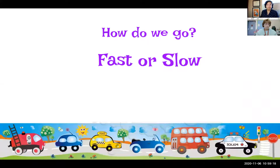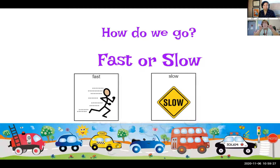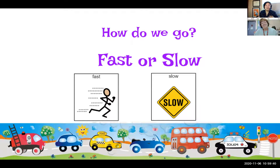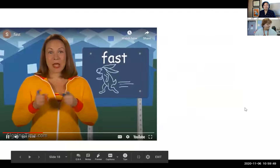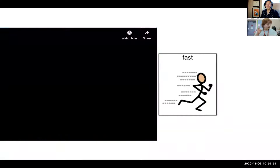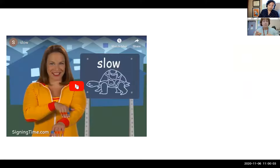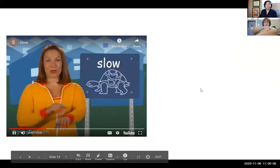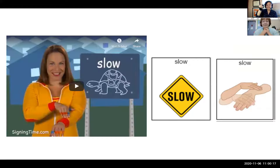We're gonna learn about how cars go — they can go fast, and then they can go slow. Do you like cars that go fast, Miss Mary? Yes I do! I like cars that go slow, nice and safe. Here's how you say fast — fast! Make your pointers pull back: fast fast fast. And here's how you say slow — slow, slowly up your other hand. That yellow sign means slow.